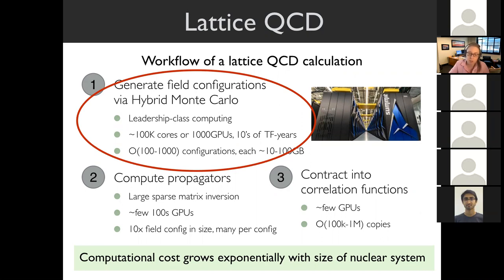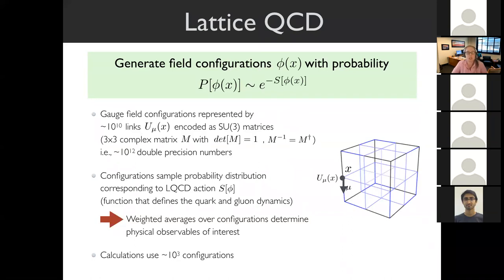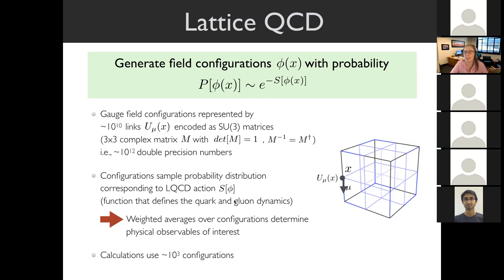The precise computational task we want to address with machine learning is generating field configurations sampled according to a known probability distribution—an exponential weighting of the action, which is a function of phi that we can compute. These field configurations are represented on the links of the lattice. For QCD, each link is an SU(3) matrix—a 3×3 complex matrix with unit determinant. In state-of-the-art calculations that works out to something like 10^12 double-precision numbers per sample, and we want to sample these according to the action defining quark and gluon dynamics.